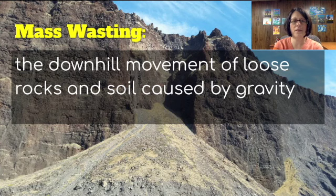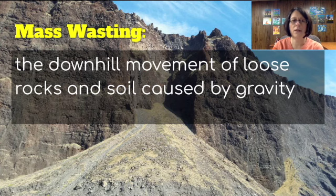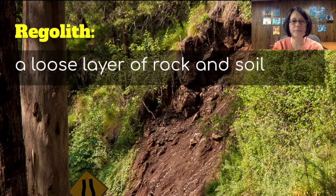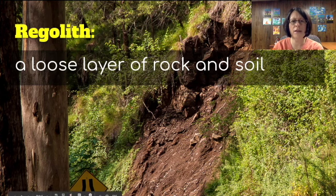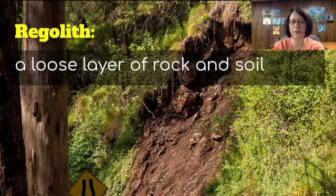Mass wasting is the downhill movement of loose rocks and soil caused by gravity. As you can see in that background picture, there has been some rocks falling. A cause of this is called regolith — it's the loose layer of rock and soil. I have this picture to try to show that loose layer that has let go here and gone down the hill.